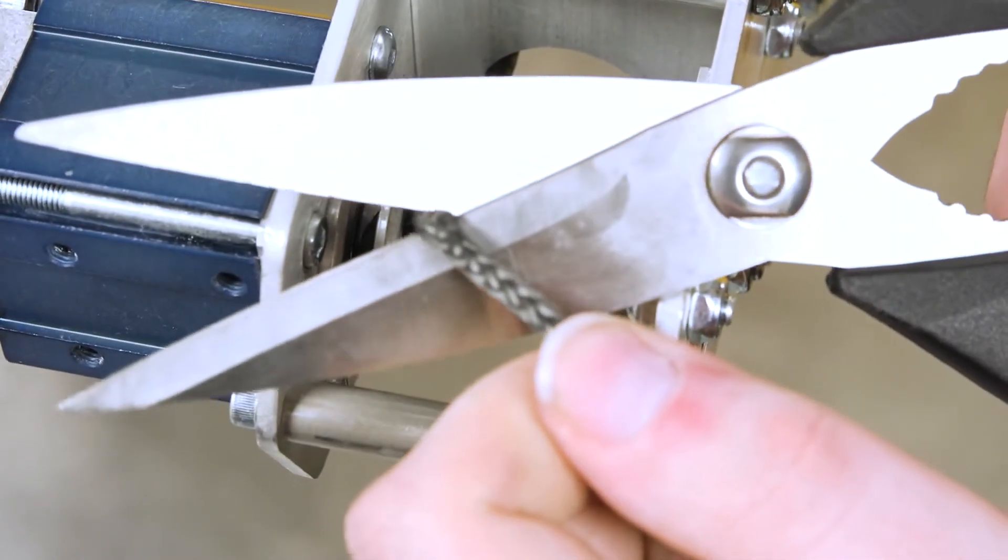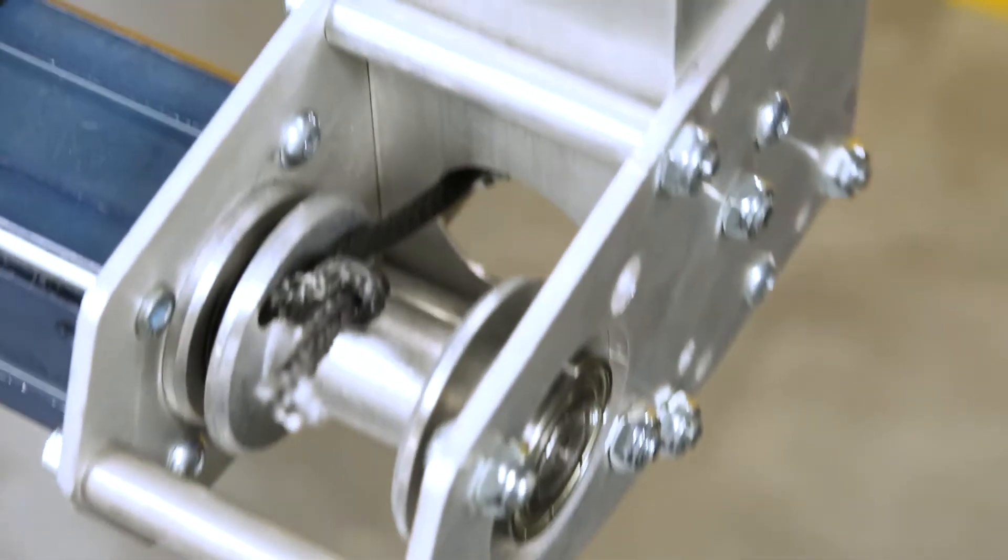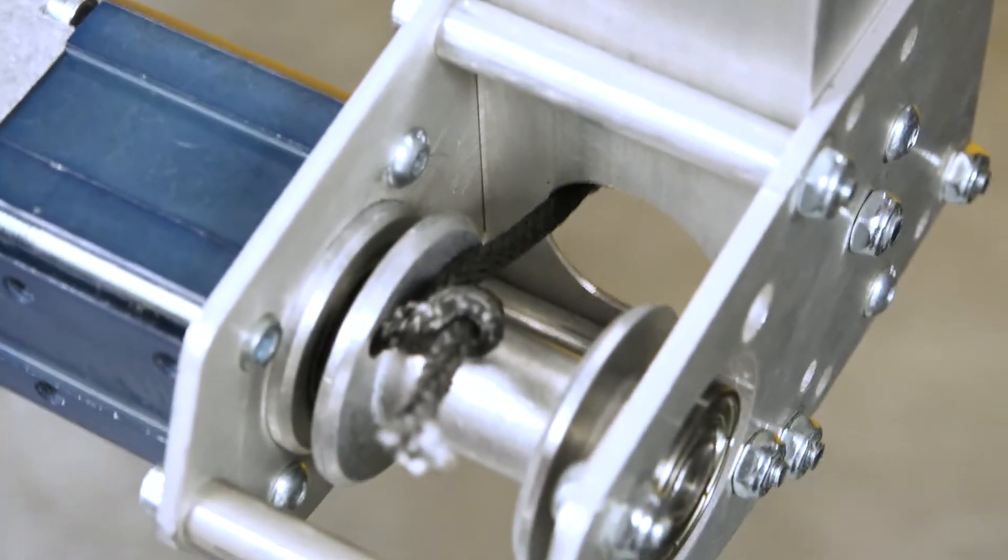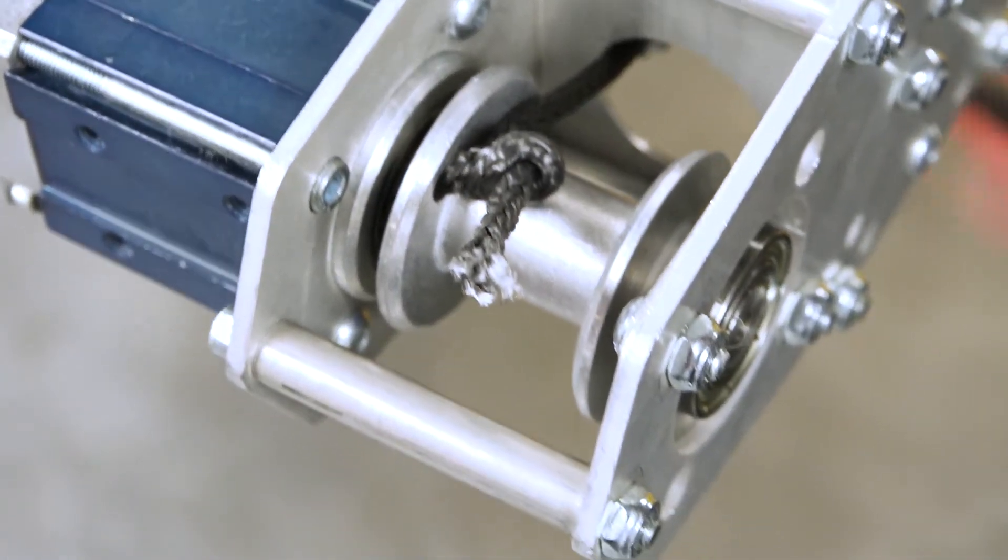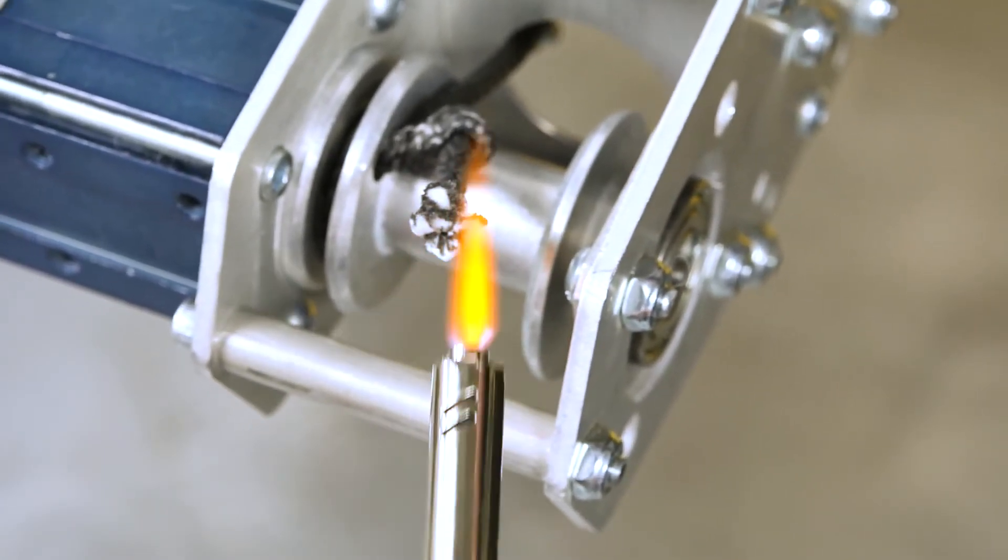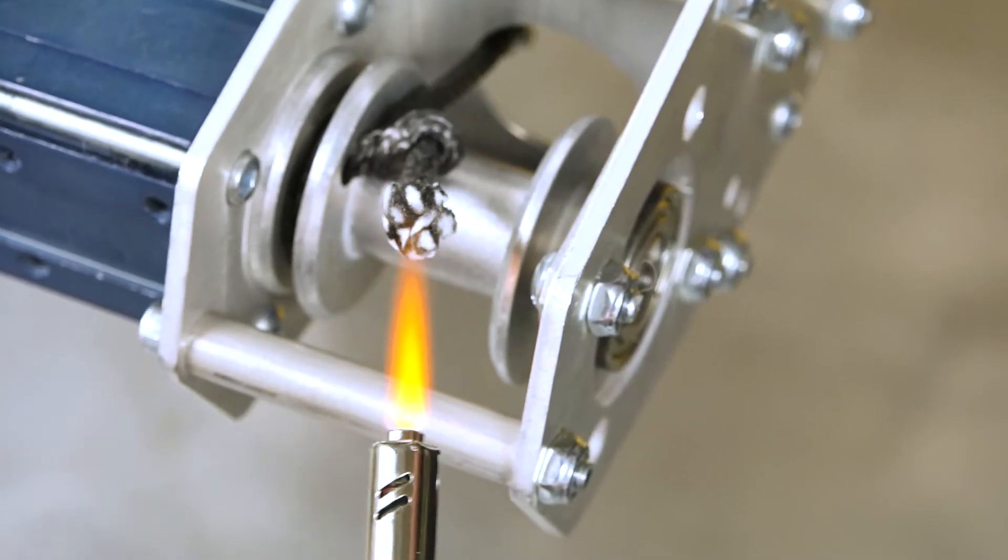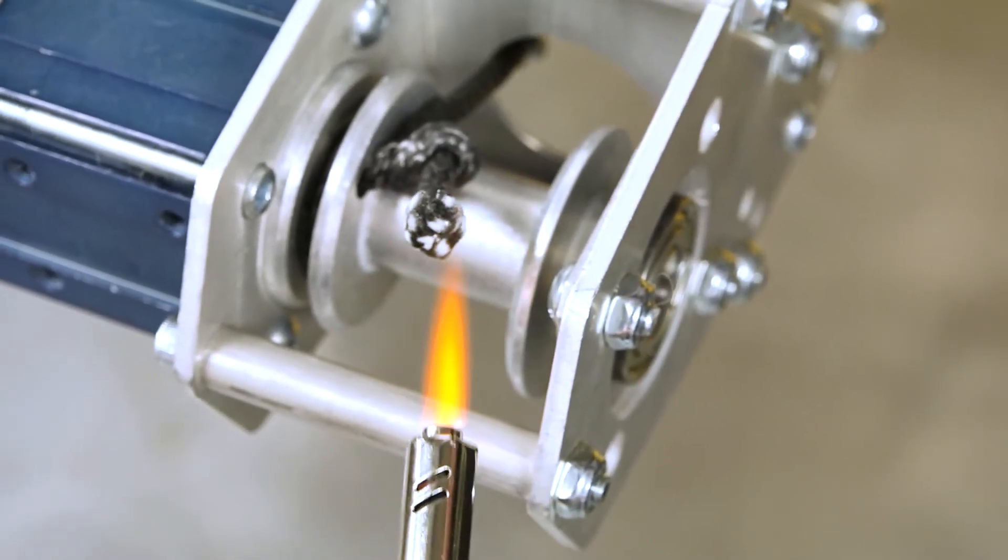Take the lighter and use it to burn the edges down. Make sure you're not burning the rope per se, but making it so that it can't come undone and fray.